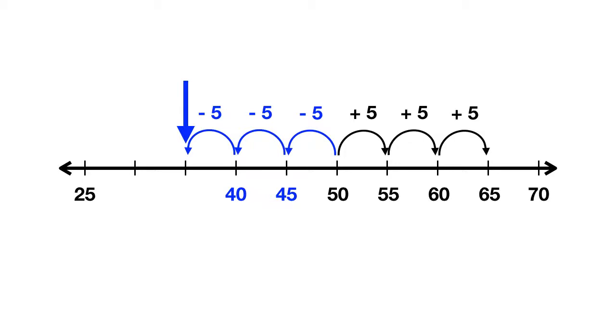Where are we now? 40 minus 5 is 35. And so our arrow is pointing at the number 35.